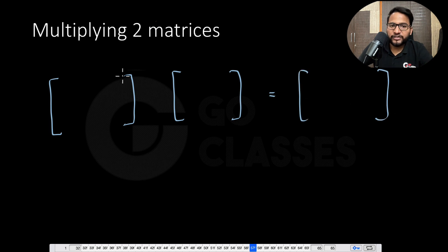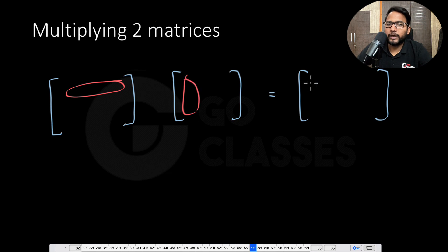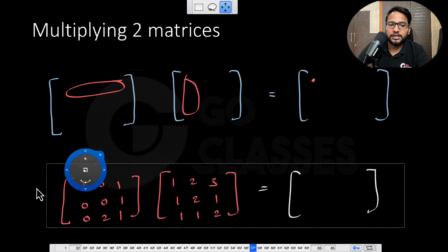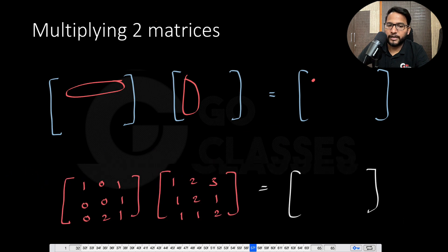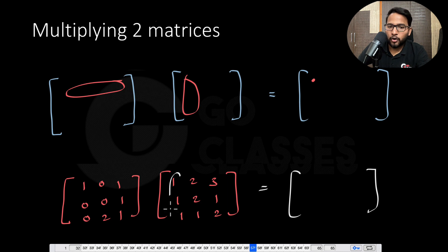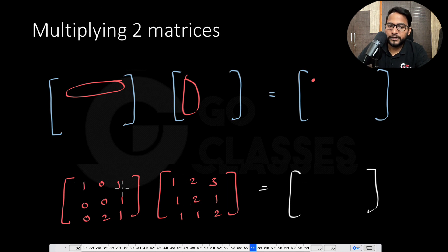We take the first row of this and then the first column of this to get this element. For example, let's suppose these are the two matrices that we have. If we want to multiply them, we will take the first row and the first column, then we get the first element — which means 1 into 1, that's 1 plus 1, it is 2.